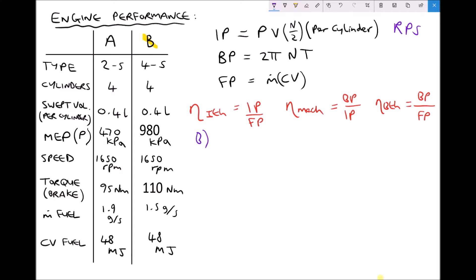The first thing we are going to calculate is the indicated power, but I want to draw your attention to a slight modification to the formula. Previously, indicated power was calculated by doing pressure × swept volume × rotational speed per cylinder. But for a four stroke engine we divide the rotational speed by two, because in a four stroke engine we only deliver power every two revolutions of the crank. Intake and compression occur during the first revolution, and power and exhaust during the second. Therefore every two revolutions yields one power cycle.